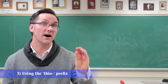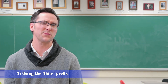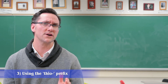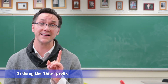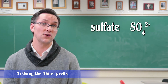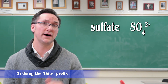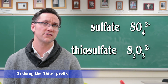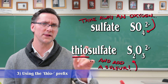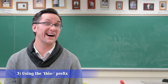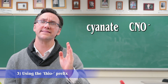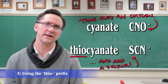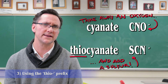'Thio' simply means that you take out one of the oxygens of the polyatomic and replace it with a sulfur, typically written at the beginning. Since sulfur and oxygen have the same charge — negative two — the charge of the polyatomic will not change. For instance, sulfate is SO4 2 minus. Thiosulfate would be S2O3, still 2 minus — we took away one oxygen and replaced it with sulfur. Another common example is thiocyanate: cyanate is CNO minus, and we take that oxygen off and bring it to the front as a sulfur, giving SCN minus.